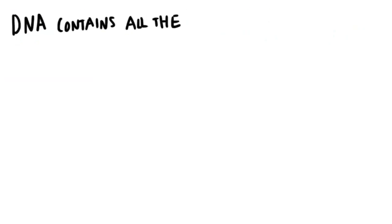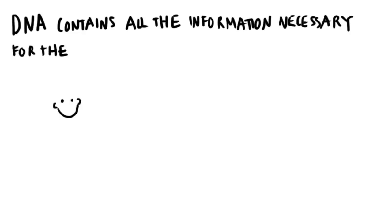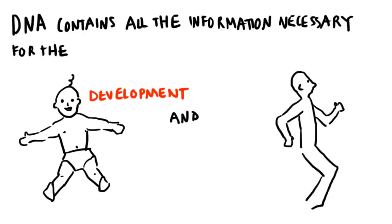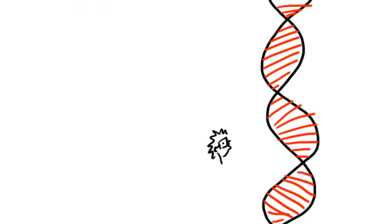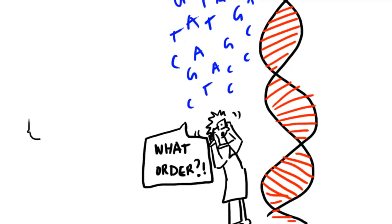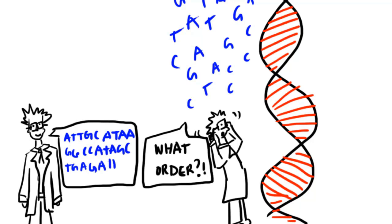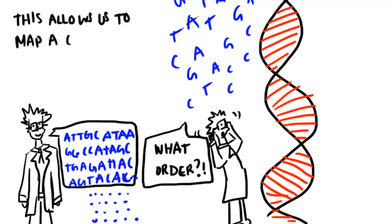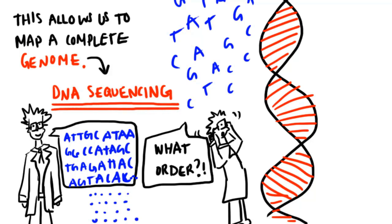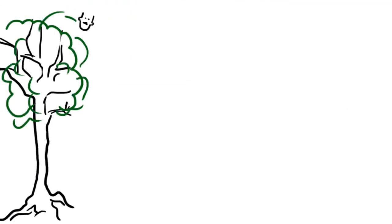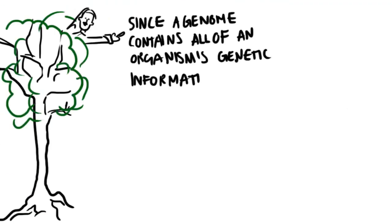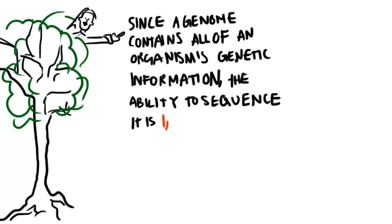DNA contains all the information necessary for the development and function of organisms. Scientists have a number of different technologies now to determine the order of these nucleotide bases in our DNA, which allows us to map a complete genome. This is called DNA sequencing, or gene sequencing. Since a genome contains all of an organism's genetic information, the ability to sequence a human genome is indispensable in various branches of biological research and medicine.